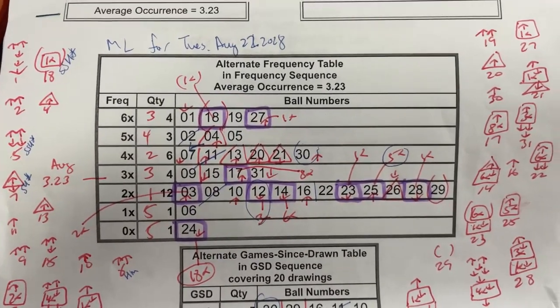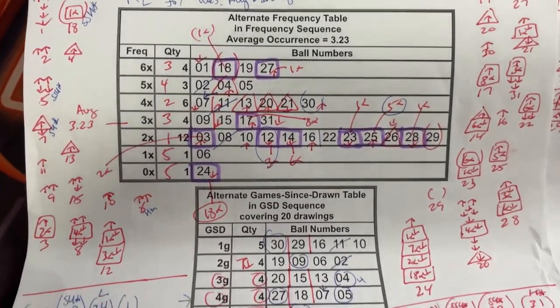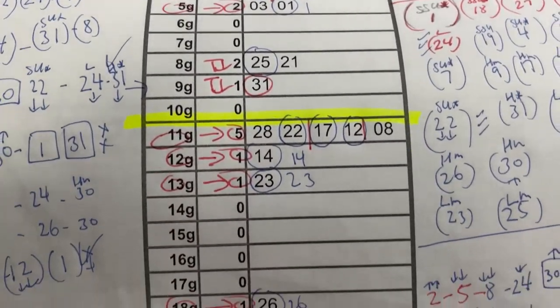You're looking at my mini-lotto worksheet for Tuesday, August 22nd. I've been working very hard trying to find the best numbers for us.